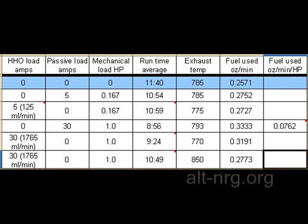So now the real data. In this first panel, the line highlighted in blue is our baseline run times. We have no power going into the HHO cell, no passive load, and therefore no mechanical load on the output horsepower. The run time average is 11 minutes 40 seconds, and my average exhaust temp was 785 degrees. Based on it taking 11 minutes and 40 seconds to consume 3 ounces of fuel, that's 0.2571 ounces of fuel used per minute with no load on the motor.